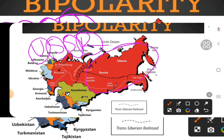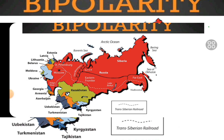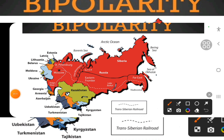We will only understand this much about USSR for now; when we look into the chapter in detail, we will discuss it further. Basically, USA and USSR were two organizations that were becoming increasingly strong, and because of that strength, they entered into a race to become superpowers.